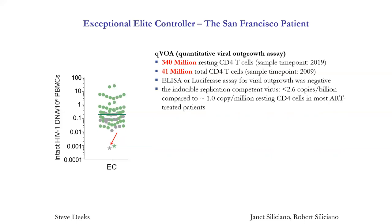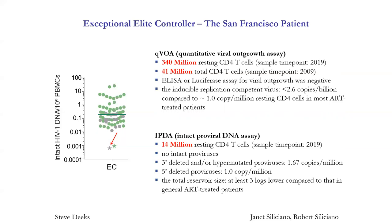Bob and Janet's group also used their novel IPDA assay to detect proviruses in 14 million resting CD4 cells, and consistent with sequencing data, they found no intact proviruses, only deleted or hypermutated ones. The total reservoir size in this patient is estimated to be at least three logs — a thousand fold lower — than what we normally see in ART-treated patients.